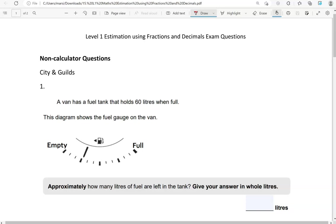Here is the first question. A van has a fuel tank that holds 60 litres when full. This diagram shows the fuel gauge on the van. Approximately how many litres of fuel are left in the tank? Give your answer in whole litres.